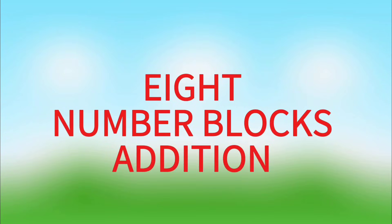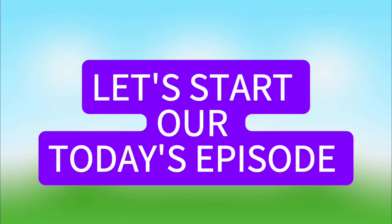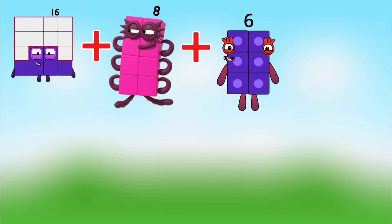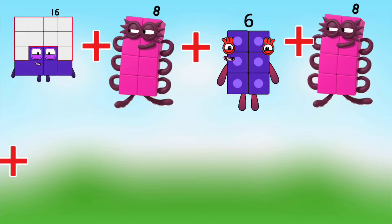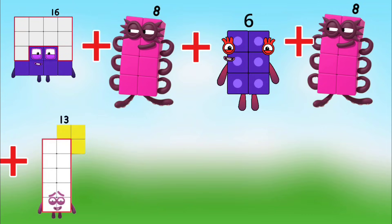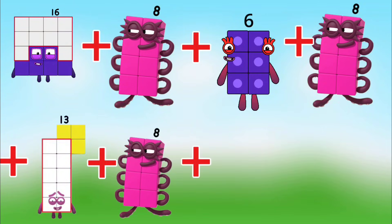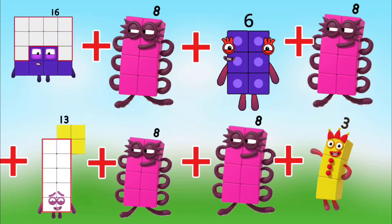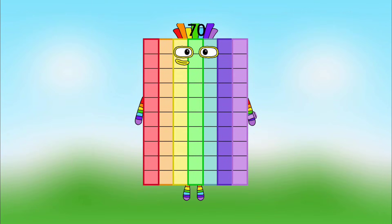Number Blocks Addition. Let's start today's episode. 16 plus 8 plus 6 plus 8 plus 13 plus 8 plus 8 plus 8 plus 3 is equal to 70.